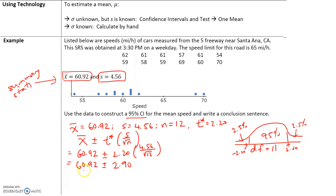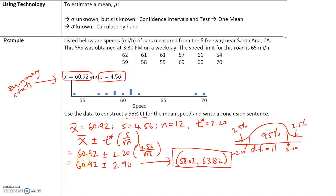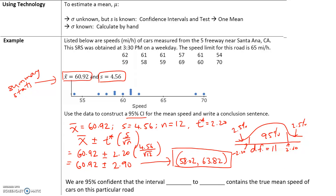Converting to a confidence interval: 60.92 plus 2.90 gives 63.82 miles per hour, and 60.92 minus 2.90 gives 58.02 miles per hour. Based on the sample mean of 60.92 and a margin of error of 2.90, we can say with 95% confidence that the true average speed of all cars at 3:30 p.m. on this freeway is between 58.02 and 63.82 miles per hour. We are 95% confident that the interval 58.02 to 63.82 miles per hour contains the true mean speed of cars on this road.